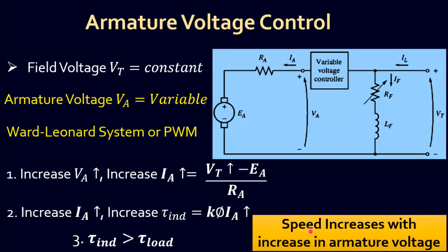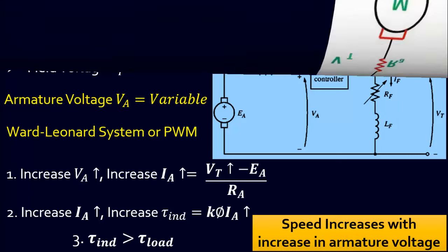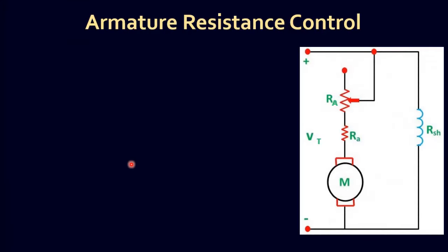In summary, as armature voltage is increased, the motor speed is increased. The last method is armature resistance control, which is the least common and most inefficient method of speed control. As you can see in the diagram, a variable resistor RA is added in series with the armature to control armature current IA.